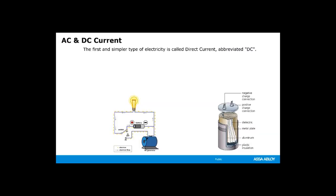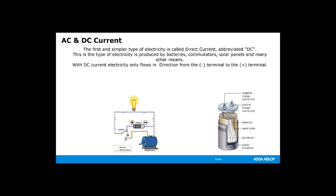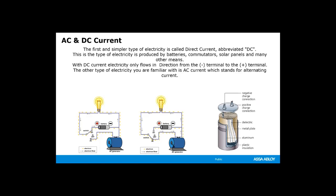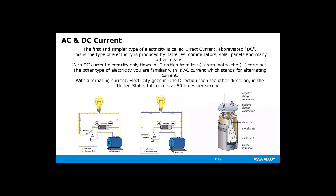The first and simpler type of electricity is called direct current, abbreviated DC. DC current is created by using batteries, commutators, solar panels, and other means. With DC current, the electricity flows in one direction, from the negative terminal to the positive terminal. The other type of electricity you're familiar with is alternating current, abbreviated AC. With alternating current, the electricity goes in one direction and then reverses. In the United States, this occurs at 60 times per second.